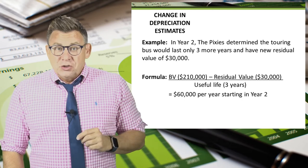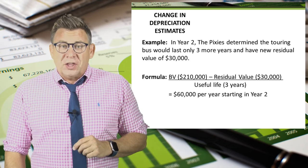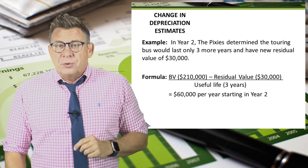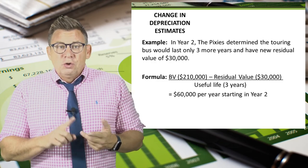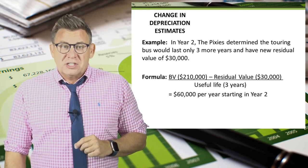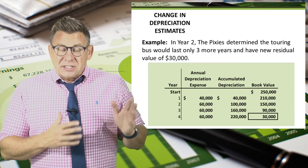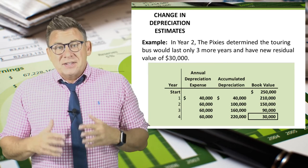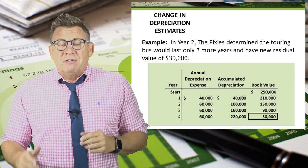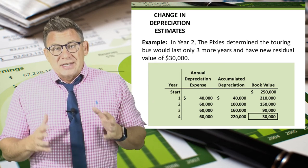The book value of $210,000 minus the revised residual value of $30,000 divided by the revised remaining useful life of three years means that in years two, three, and four, we would record $60,000 of depreciation expense. After four years, the book value is the cost of $250,000 minus accumulated depreciation of $220,000, giving us a net book value of $30,000, which equals the residual value. The tour bus cannot be depreciated below its residual value.